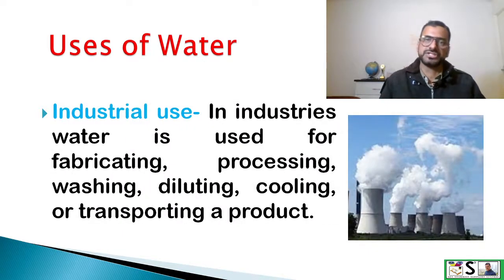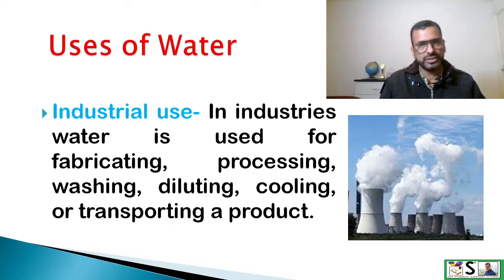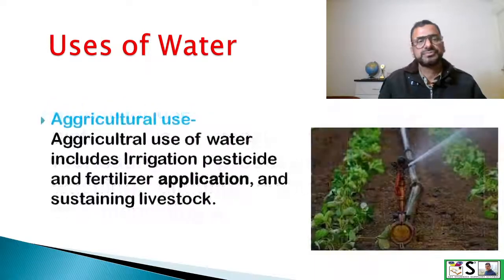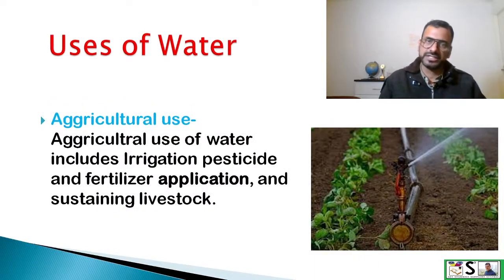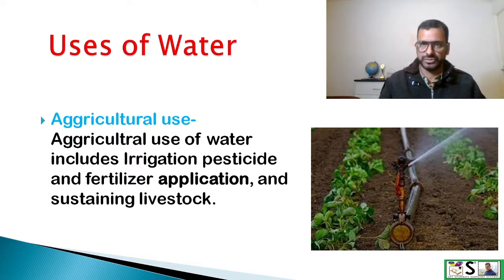Industrial use. In industries water is used for fabricating, processing, washing, diluting, cooling or transporting a product. Agricultural use. Agricultural use of water includes irrigation, pesticide and fertilizer application, and sustaining livestock.